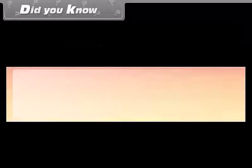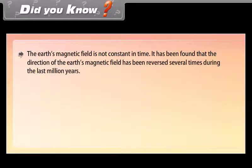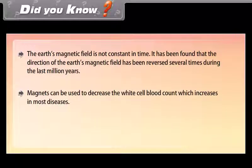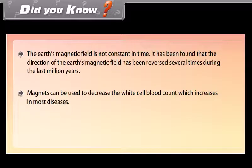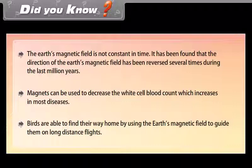Did you know: the Earth's magnetic field is not constant in time — its direction has been reversed several times during the last million years. Magnets can be used to decrease the white blood cell count, which increases in most diseases. Birds are able to find their way home by using the Earth's magnetic field to guide them on long-distance flights.